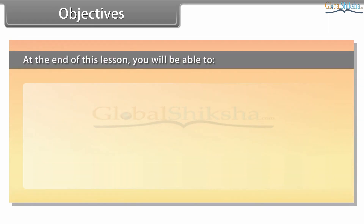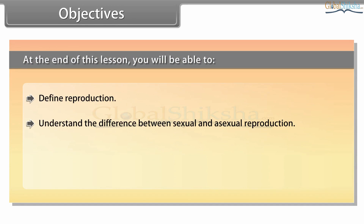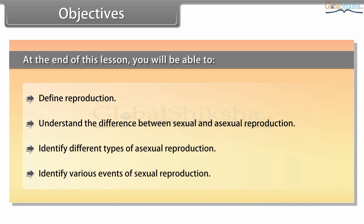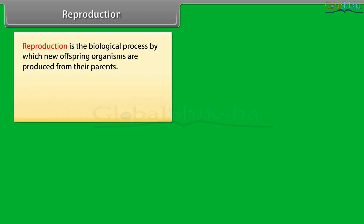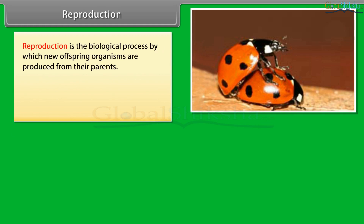At the end of this lesson, you will be able to: define reproduction, understand the difference between sexual and asexual reproduction, identify different types of asexual reproduction, and identify various events of sexual reproduction.